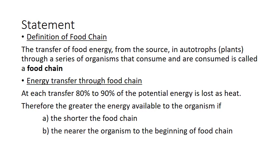The energy transfers through a food chain; at each transfer, 80 to 90% of the potential energy is lost as heat. Only 10% of the energy goes to the next trophic level. Therefore, the greater the energy available to the organism, the shorter the food chain, or the nearer the organism to the beginning of the food chain.